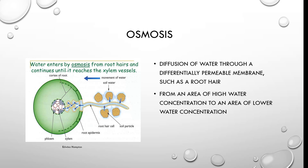Osmosis is the diffusion of water through a membrane such as a root hair. Water enters by osmosis from root hairs and continues until it reaches the xylem cells. Osmosis involves movement from an area of high water concentration to an area of low water concentration.